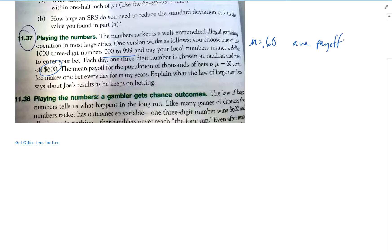Now, Joe makes one bet for many years. Explain what the law of large numbers says about Joe's results if he keeps on betting. Law of large numbers. Well, first of all, the law of large numbers says in the long run, what's his chance of winning? His chance of winning is one in a thousand. And so, in the long run, he's going to win one out of every thousand times he bets.